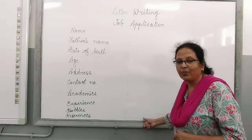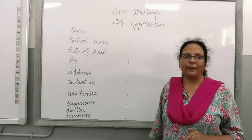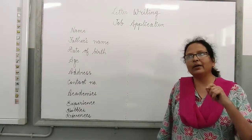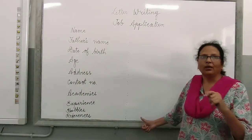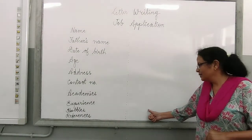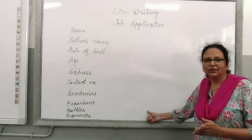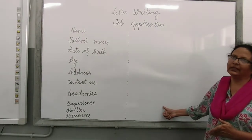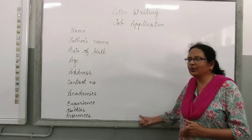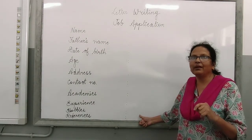Now references — this is very very important. You have to give a minimum of 2 references. For the first, you can write the name of a principal of a school and mention which school. For the second, you can write another name, but the person should be familiar.